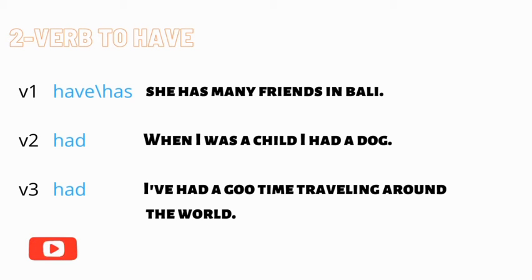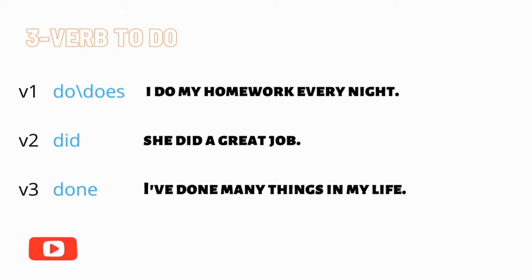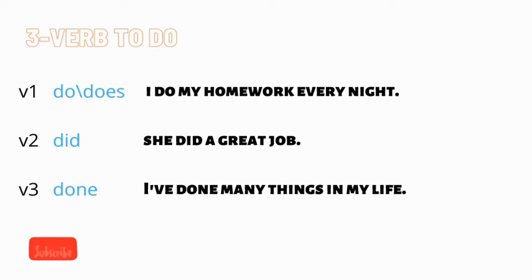Let's move on to verb number three: 'to do.' This is a very common verb that we use every day, and it's very important to learn. The base form is 'do' or 'does,' the past form is 'did,' and the past participle is 'done.' An example for the base form: 'I do my homework every night.'